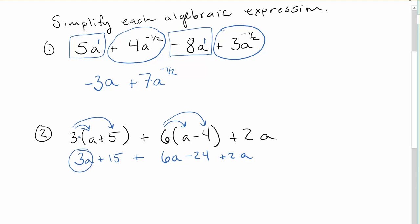Now I'm going to look for like terms including any signs in front of them. So I see I've got a 3, a positive 6, and a positive 2. I can assume that 3 is positive because it doesn't have a sign there. So 3 plus 6 is 9 plus 2 is 11. We get 11a.